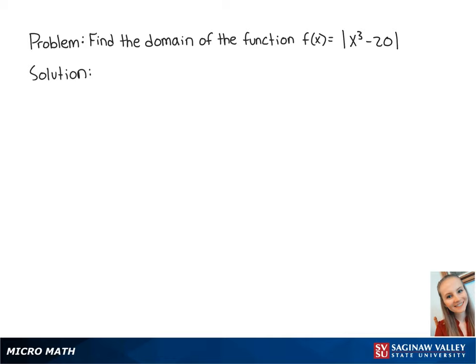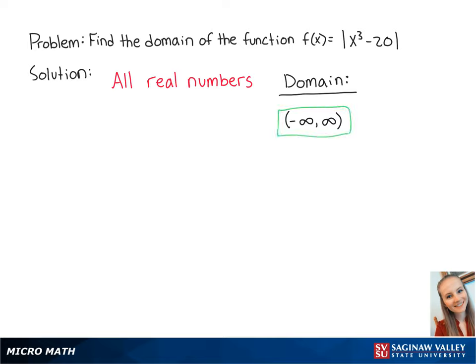For this problem, we want to find the domain of the function f(x) = |x³ - 20|. For an absolute value function, x can be all real numbers. So the domain is all numbers between negative infinity to positive infinity. And this is the final answer.